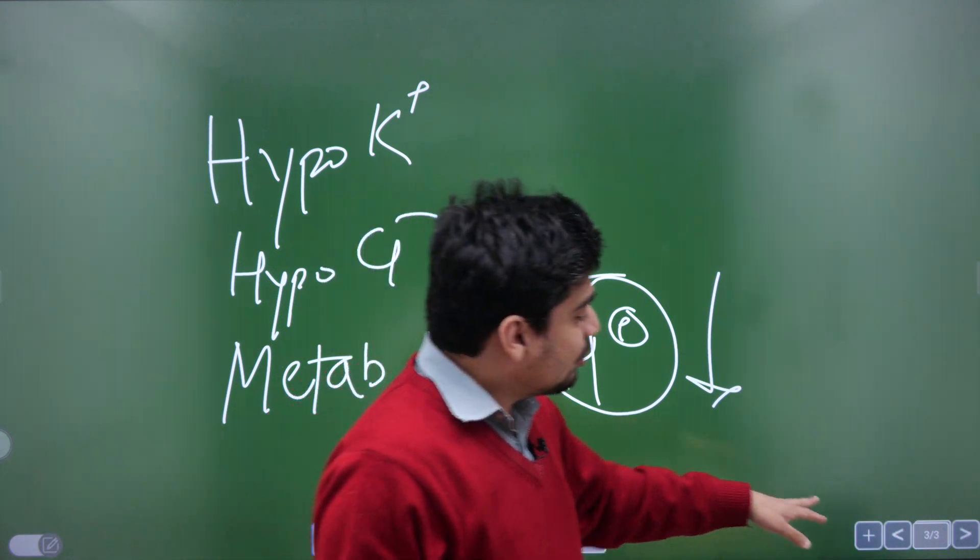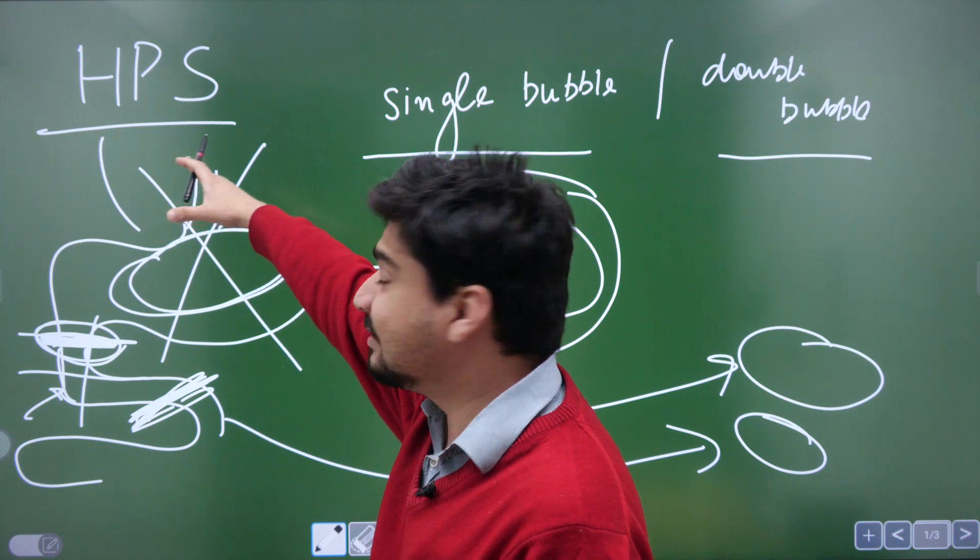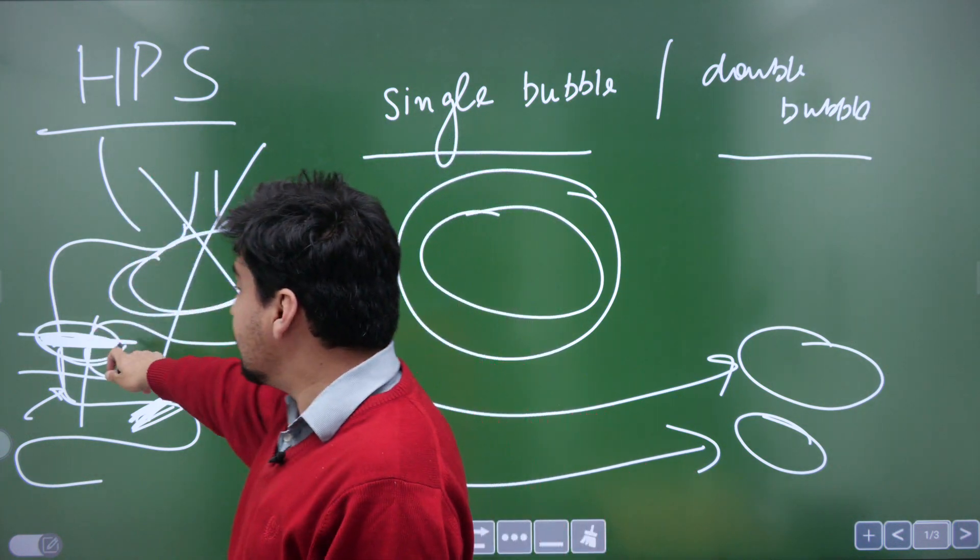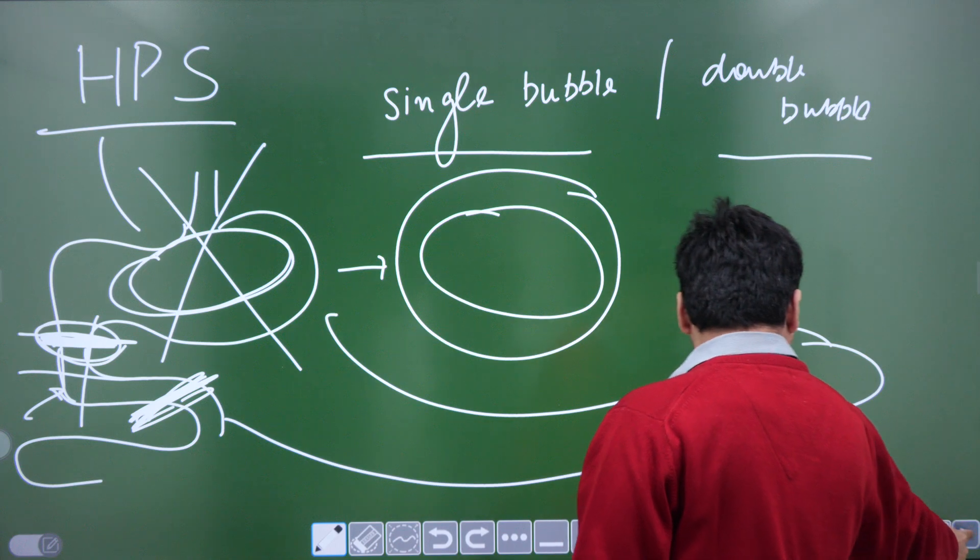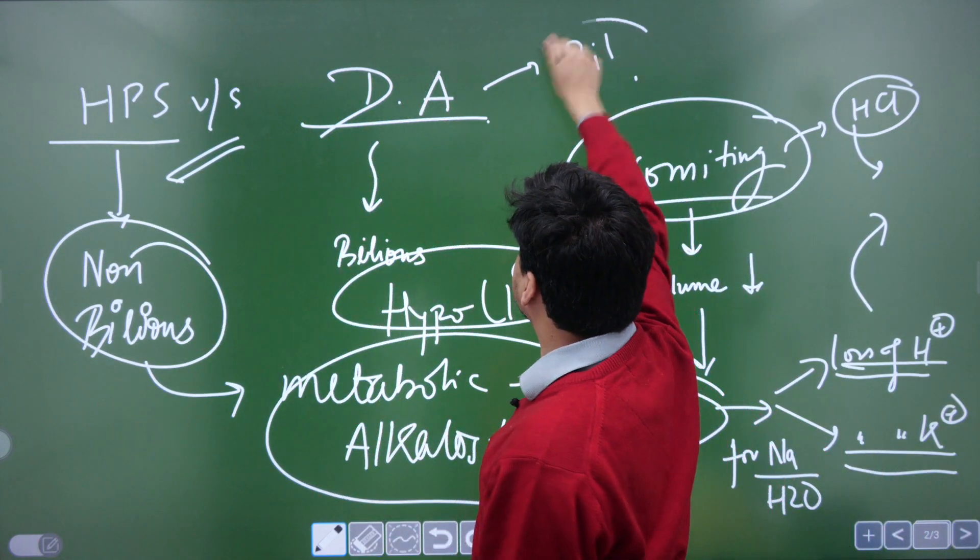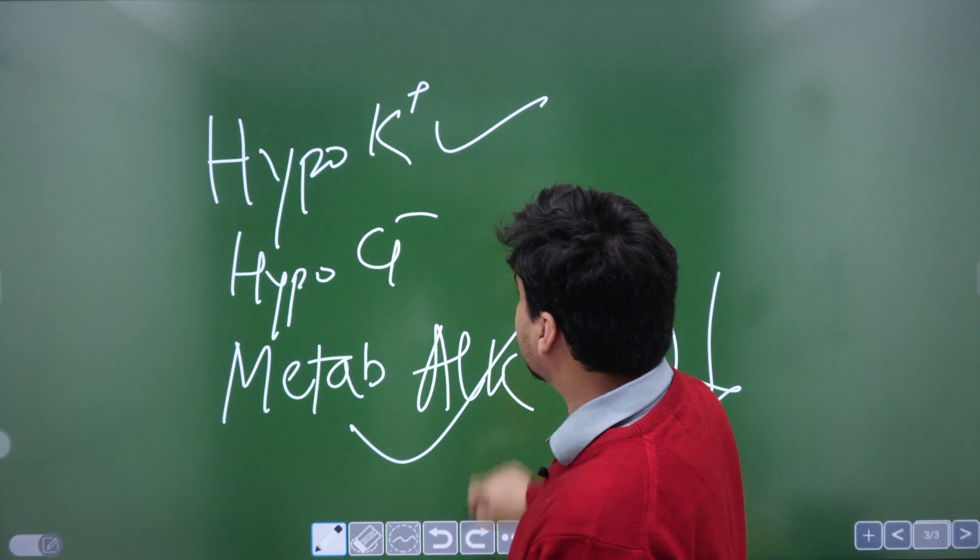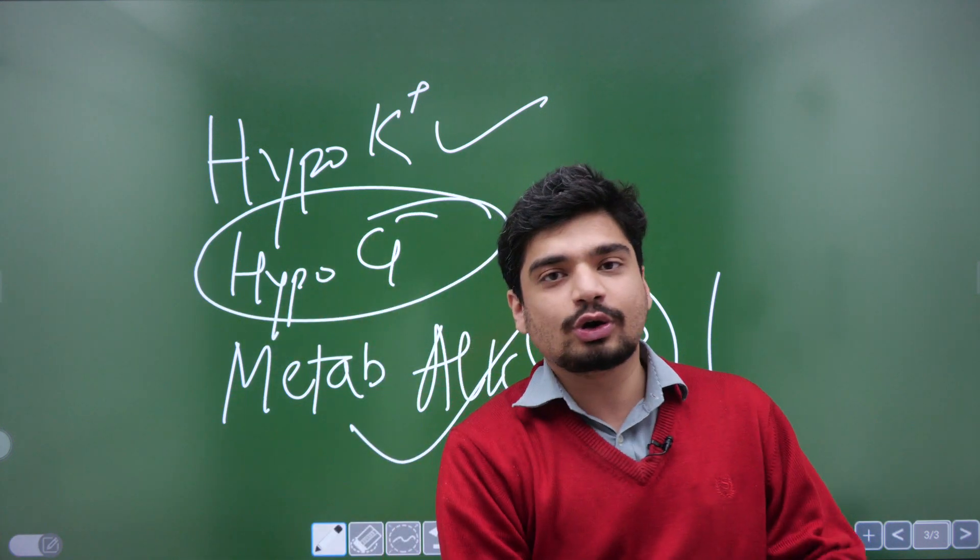So these are the three very easy questions that are asked as far as hypertrophic pyloric stenosis is concerned: single bubble sign, there will be non-bilious vomiting versus duodenal atresia which will have bilious vomiting, and the metabolic abnormality - hypokalemia, metabolic alkalosis and hypochloremia.